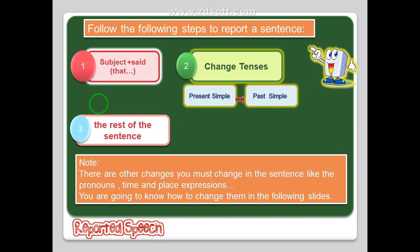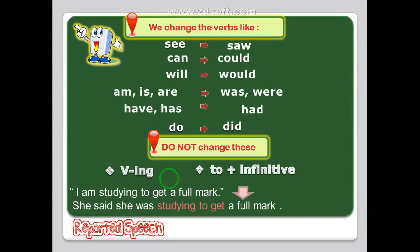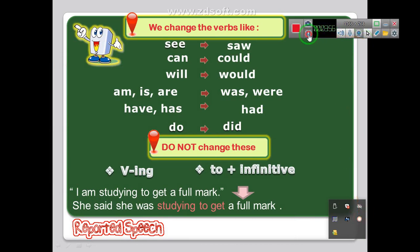We must change the pronouns, the time and place expressions. The first step is to change the verbs. Here we have some examples of verb changes: 'see' becomes 'saw', 'can' becomes 'could', 'will' becomes 'would', 'is' becomes 'was', 'has' or 'have' becomes 'had', 'do' becomes 'did'.